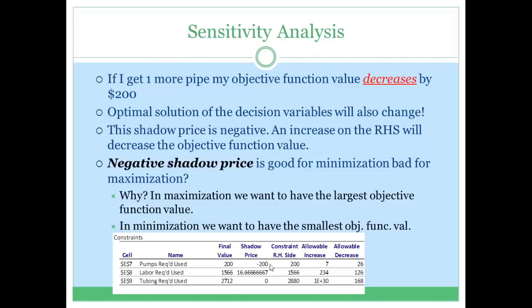If you were to increase the right-hand side by 2 units, the objective function value would change by 2 times negative 200, which is minus 400, meaning it would decrease by $400. Make sure these values are within the allowable ranges, and that you are only changing a single right-hand side at a time — you can't be changing two of them simultaneously. That is what a negative shadow price means: you just read it exactly as it appears in the table.